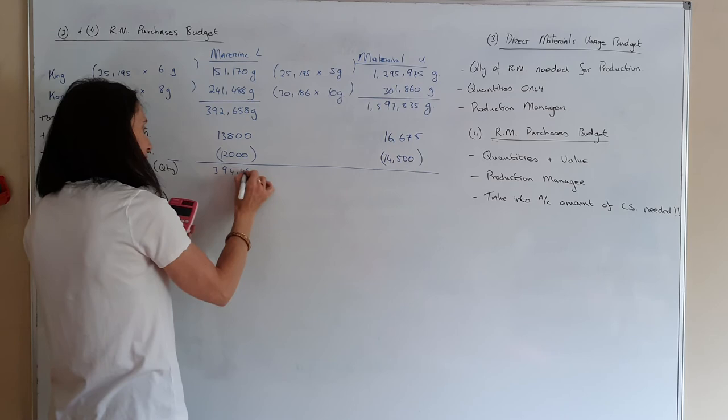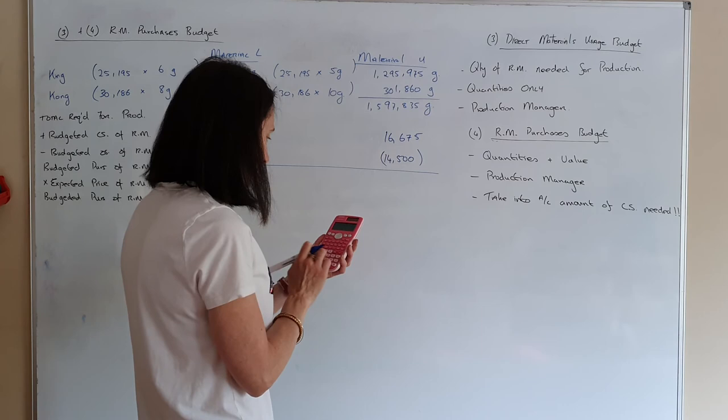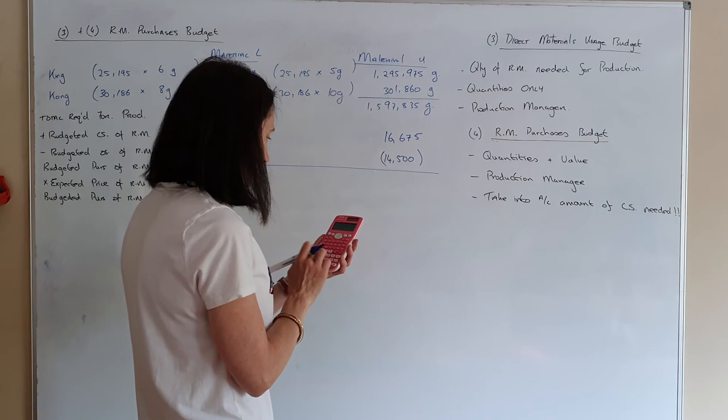Adding these up: 392,658 plus closing stock 13,800 minus opening stock 12,000 gives 394,458 grams — put in your units so you don't go wrong later. For material U: the total comes to 1,610,000 kilograms after accounting for the opening and closing stocks.